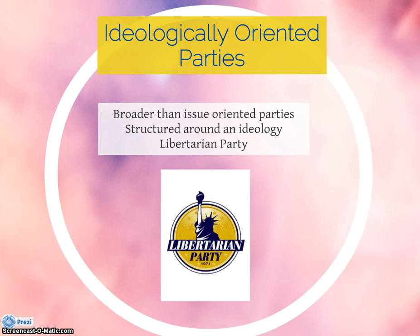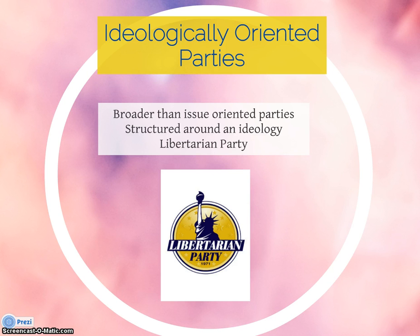The Libertarian Party also calls for no governmental interference in individuals' privacy, the legalization of prostitution and drugs, and the elimination of major governmental bureaucracies, including the CIA, the IRS, and the FBI. Another ideologically oriented party is the Socialist Party, which lies at the other end of the ideological spectrum. The Socialist Party, formed in 1901, is one of the longest-standing ideologically oriented parties in the United States. Socialists believe that government should play a large role in ensuring economic equality for all people.